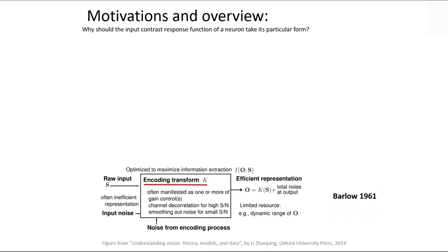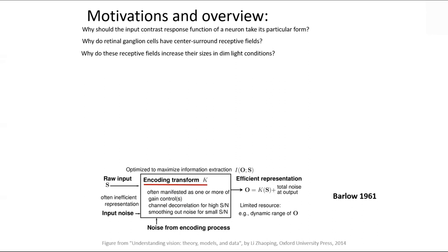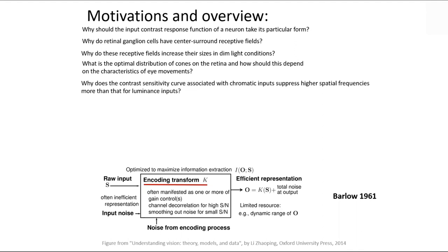The motivation is: can we understand, by this deletion theory — which has to be falsifiable — why it's a contrast sensitive function? Can we derive it from first principles? Why is it center-surround? Why does the field actually change in dim light? Why is the optimal distribution of cones peaked in the fovea? And why is the contrast sensitivity curve low-pass for chromatic input but band-pass for luminance input? Why are color-selective cells less selective to motion signals and vice versa?